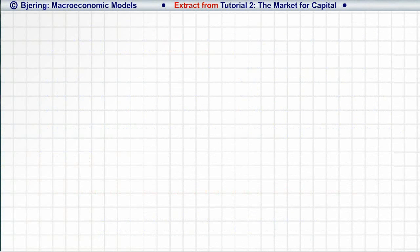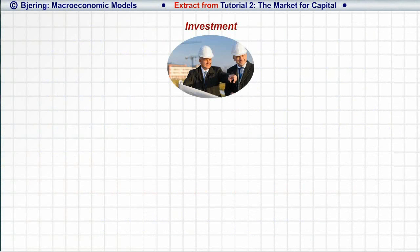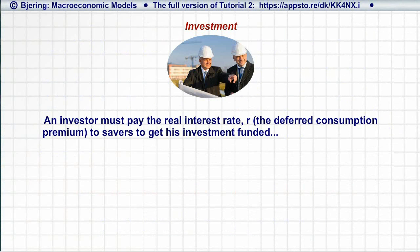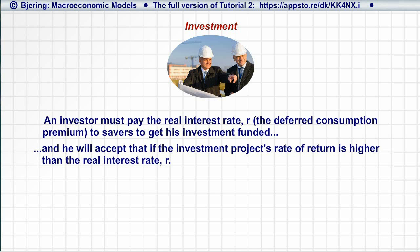To see the connection between the real interest rate and planned investment, we now turn to investor behavior. To get his investment funded, an investor must pay the premium for deferred consumption to the saver — that is, he must pay the real interest rate. And he'll accept that cost if the investment's rate of return is higher than the real interest rate.